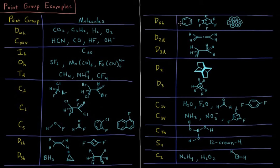D6H, something like benzene, hexafluorobenzene, coronene, principal C6 axis, mirror plane, lots of perpendicular C2s, etc.